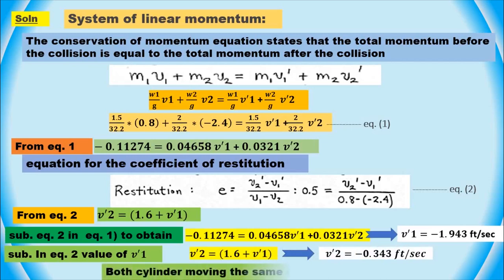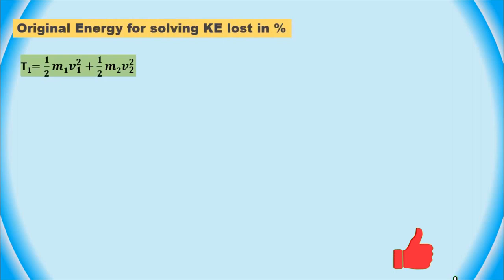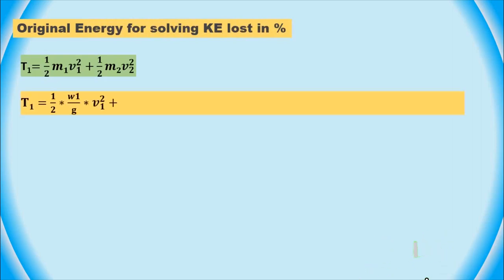After the collision, both cylinders are moving in the same direction, in the negative x-axis direction. We can now solve for the percentage of the original energy that was lost during the impact. We can use the conservation of energy equation, which states that the total mechanical energy before the collision equals the total mechanical energy after the collision.